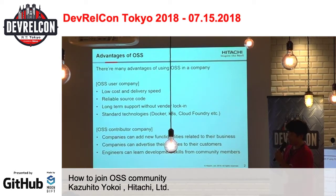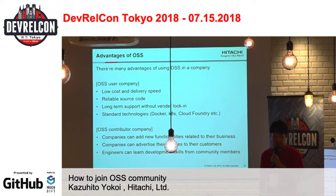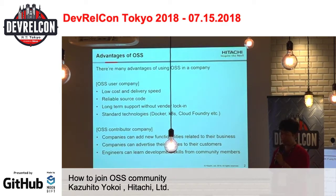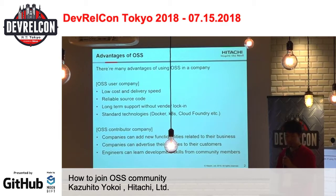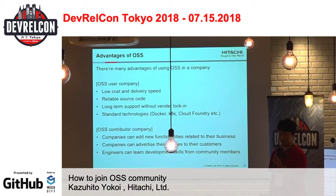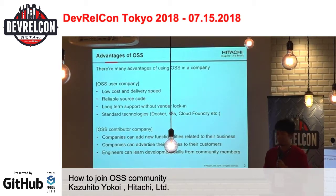Next is advantages of open source software. As you know, there are a lot of advantages of using open source software in a company. I think that user companies have four points as follows. First is low cost and delivery speed. Everyone can easily download open source software on the internet as free software. And secondly, reliable source code. Entire source code is available on the internet, so if there is an error in your system using open source software, engineers can investigate the source code and come up with their solutions.